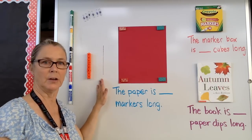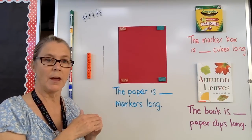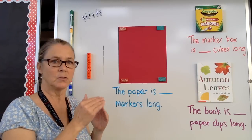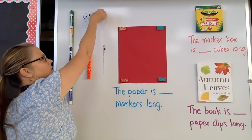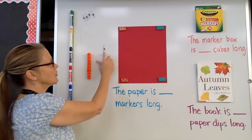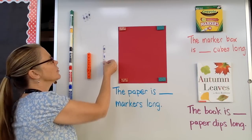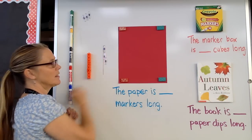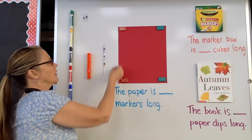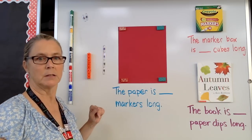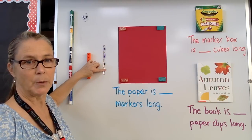Now I'll measure this line here using paper clips. Again, it's really important that they're touching end to end — no spaces, no gaps, just barely touching. So I'll start at the top and make sure each paper clip is touching the bottom of the previous one. They're not overlapping; they have to be touching in order to get an accurate measurement. So let's see how many paper clips we have: one, two, three, four paper clips.